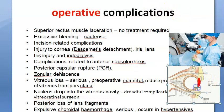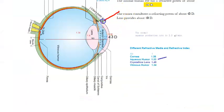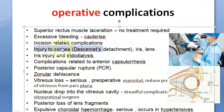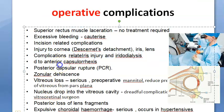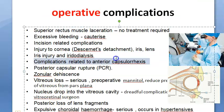Due to the incision there can be injury to the cornea, Descemet's detachment, injury to the iris, and injury to the lens. Specifically, iridodialysis can happen — the iris can get separated from its root. So cornea, iris, and lens can all be affected by the incision.